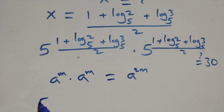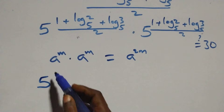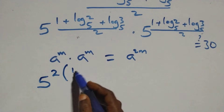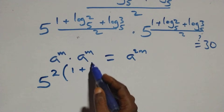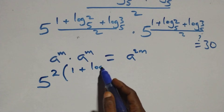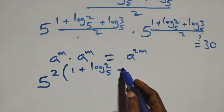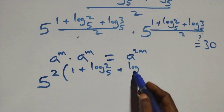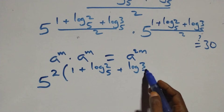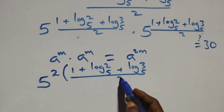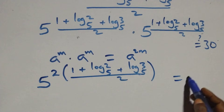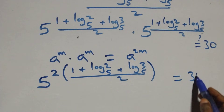We can write this as 5 raised to power 2 times (1 + log₅2 + log₅3)/2, which equals 30. The 2s cancel in the exponent, giving 5 raised to power (1 + log₅2 + log₅3) equals 30.